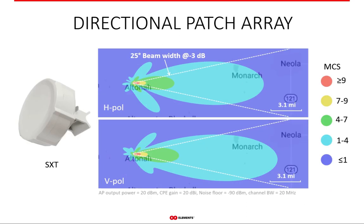Looking at real coverage plots, more can be said about any antenna — it is really the ultimate indicator of what coverage is. In the case of the directional patch array, the side lobes are very clear, as well as the chain imbalance: each polarization has quite a different coverage shape.